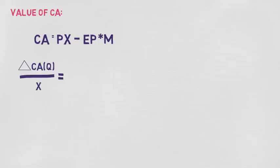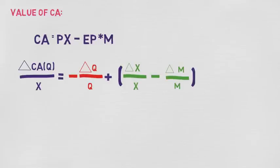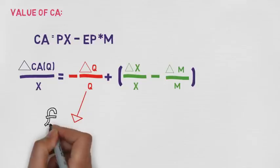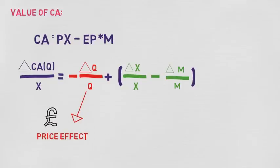The value of the current account in domestic currency is given by the following equation, where P is the domestic price of exports in domestic currency, P-star is the foreign price of imports in foreign currency, E is the nominal exchange rate, and X and M are the volume of exports and imports respectively. This equation can then be manipulated to give the current account in terms of the real exchange rate Q. It can be seen that the change in the current account is affected by two different effects: a price effect and a volume effect.